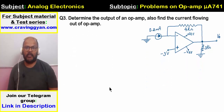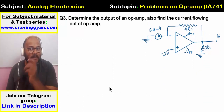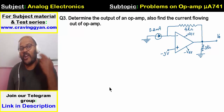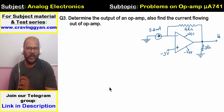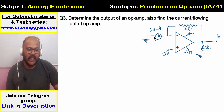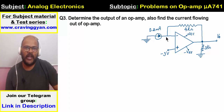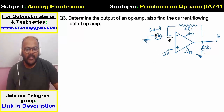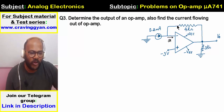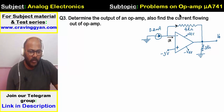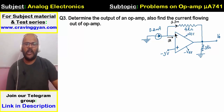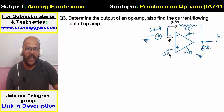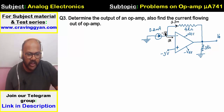Third question: determine the output of the operational amplifier and find the current flowing out of it. To solve this I'll use Ohm's law and nodal analysis. The current source provides 0.2 milliampere. The current into the op-amp is 0 amperes, so the entire 0.2 milliampere flows through the 4 kilo ohm only. Virtual short is valid: V minus equals V plus equals minus 3 volts.